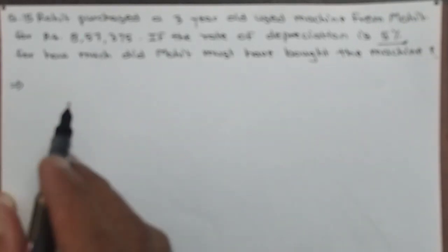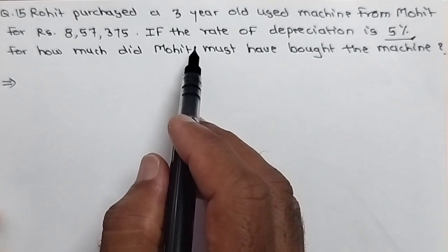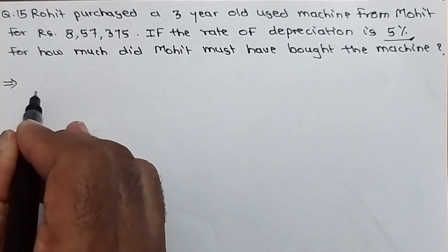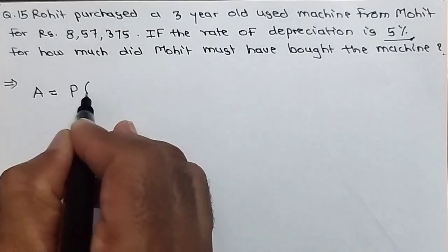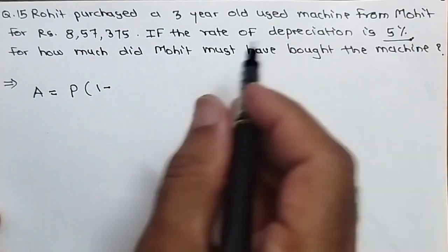Now we know the formula, here we can use the formula for compound interest. This is the example of compound interest. Formula is very simple: A is equal to P into bracket 1 minus, because here depreciation is given.